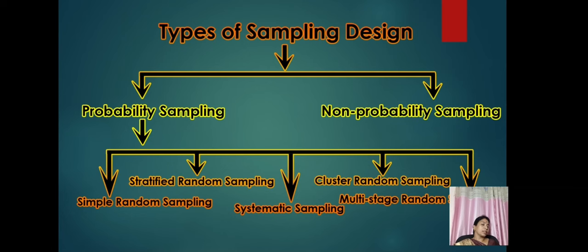In types of sampling design, we have probability sampling and non-probability sampling. Probability sampling gives equal importance to all individuals. It has been classified further into simple random sampling, stratified random sampling, systematic sampling, cluster random sampling, and multi-stage random sampling. Whereas in non-probability sampling, equal chance has been restricted.